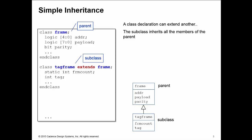TagFrame inherits the address, the payload, and the parity properties. It can also add its own members, so it adds the frame count and the tag properties, and it can even redeclare or override the members from the parent. This is common for methods but less common for properties.